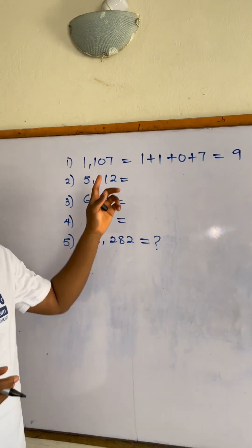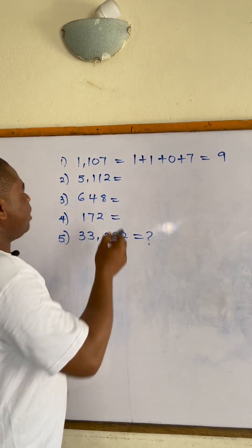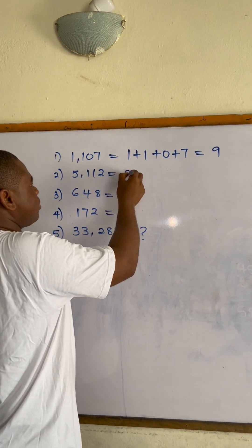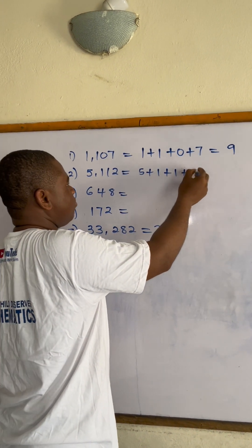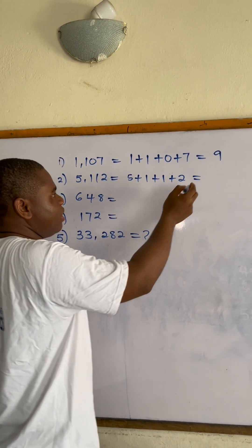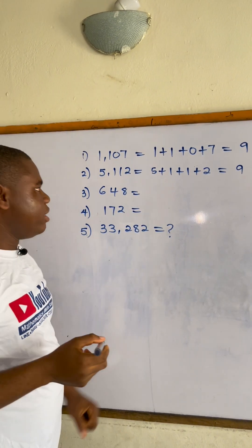It therefore means that this number is divisible by 9. The next one: we have 5,112. That's 5 plus 1 plus 1 plus 2, which gives us 9. It means that this number is divisible by 9.